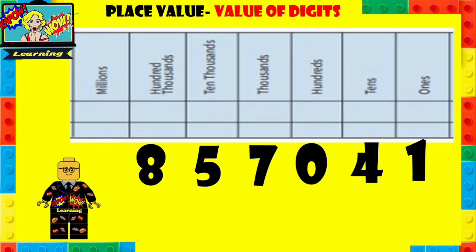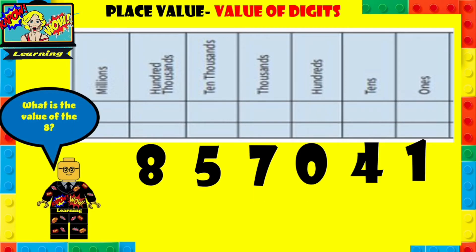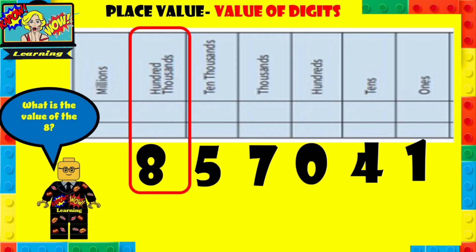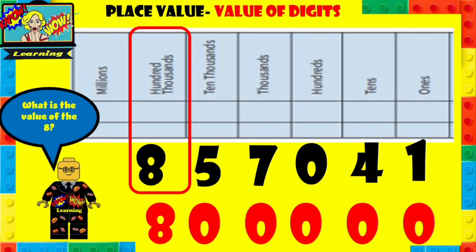Let's have a look at the next one. The final question here is: what is the value of the eight? You can try to answer this, pause it, and try to find the answer. When you have, play it and make sure you've written all the digits and numbers correctly. So the eight is in the hundred thousands column. Eight in the hundred thousands column would be eight hundred thousand.